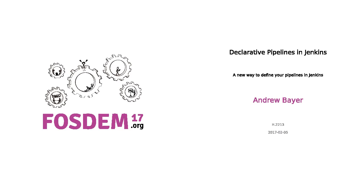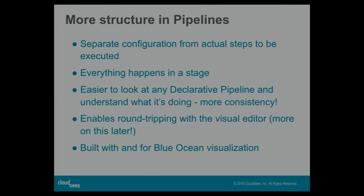The pipeline happens in a stage — there's nothing running outside of stages. This will work better with visualization, including the existing Stage View plugin and the Blue Ocean UI for Jenkins, which is still in beta. It's easier to look at any declarative pipeline and understand what it's doing than it is with a scripted pipeline. Just looking at any configuration file is easier than looking at an arbitrary bash script because it's following certain rules.